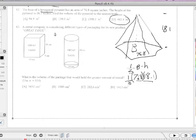A cereal company is considering different types of packaging, this thing called Great Taste. What's the volume of the package that would hold the greater amount of cereal? Okay, so we just need these two volumes.